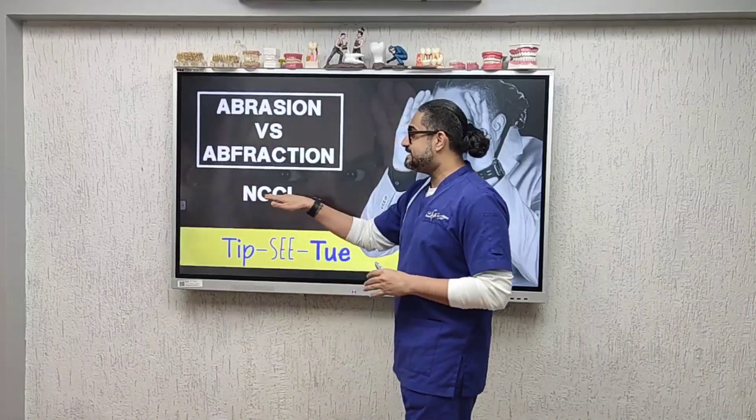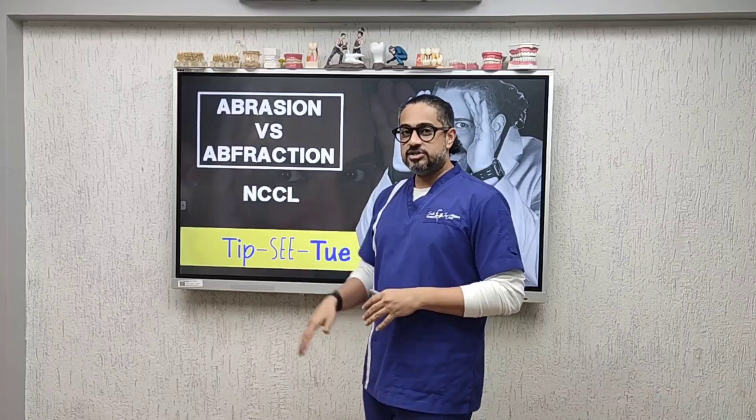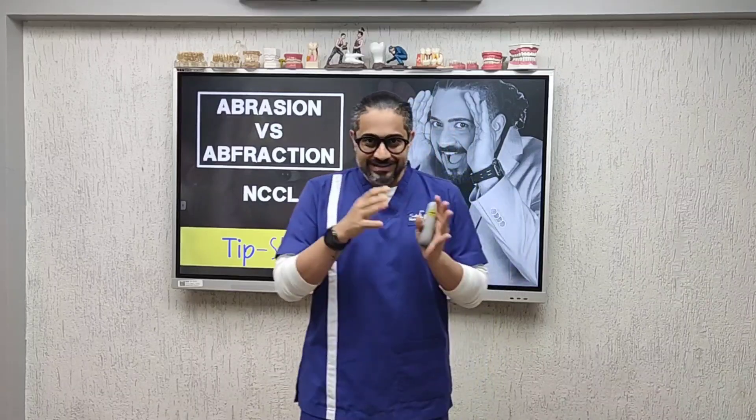Have you ever done a class 5 composite filling only to realize that the entire filling just comes out in one piece, and you are left wondering why did this happen? The answer, friends — on this episode of Tipsy Tuesday — I talk to you about NCCLs, which are non-carious cervical lesions. These are typically of two types.